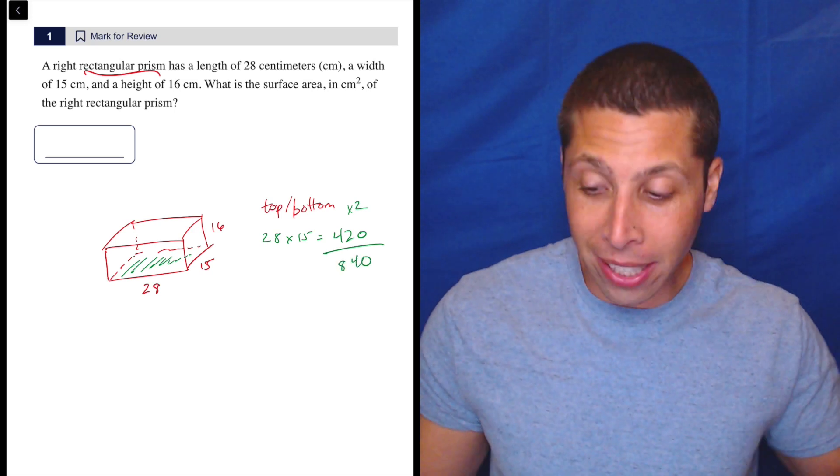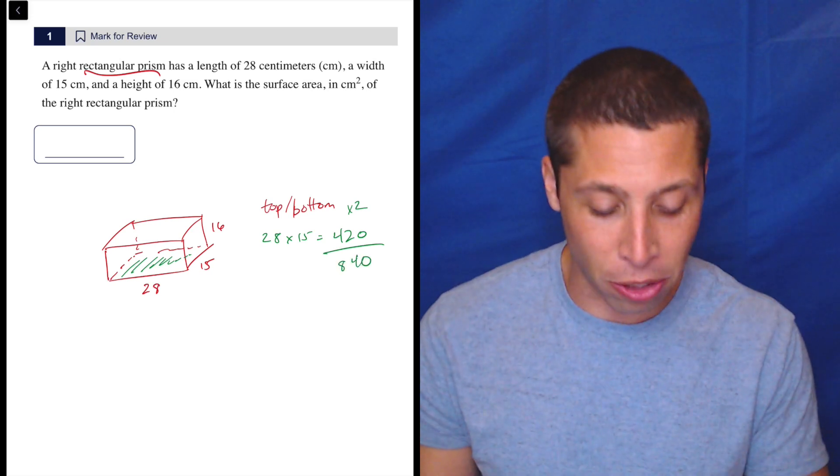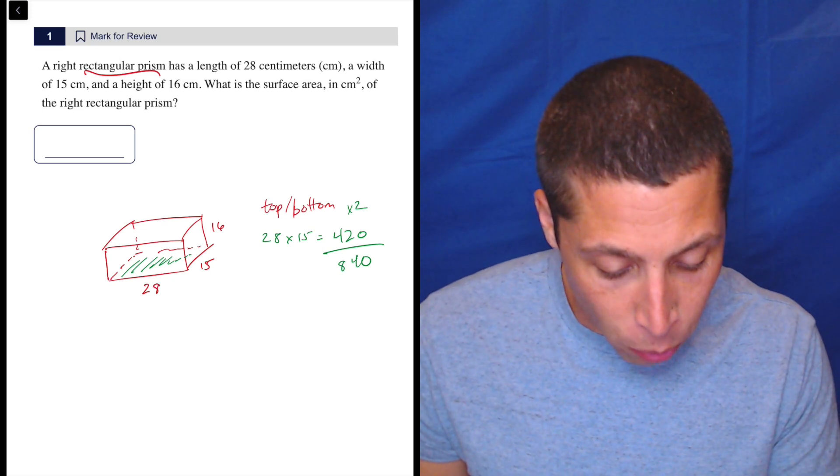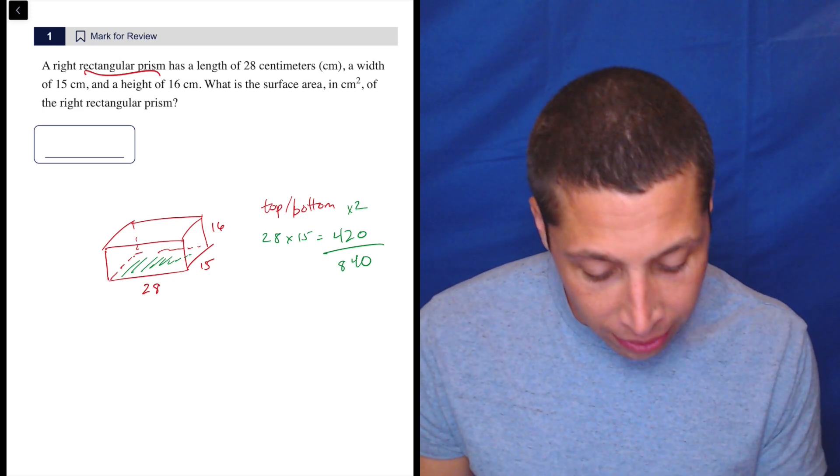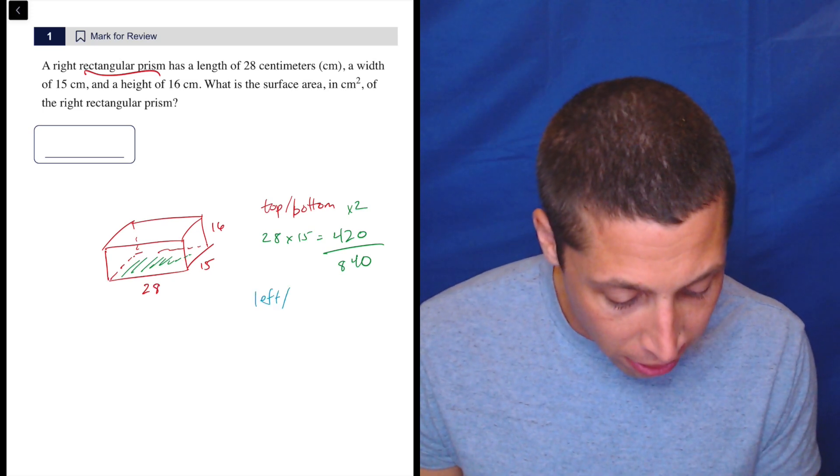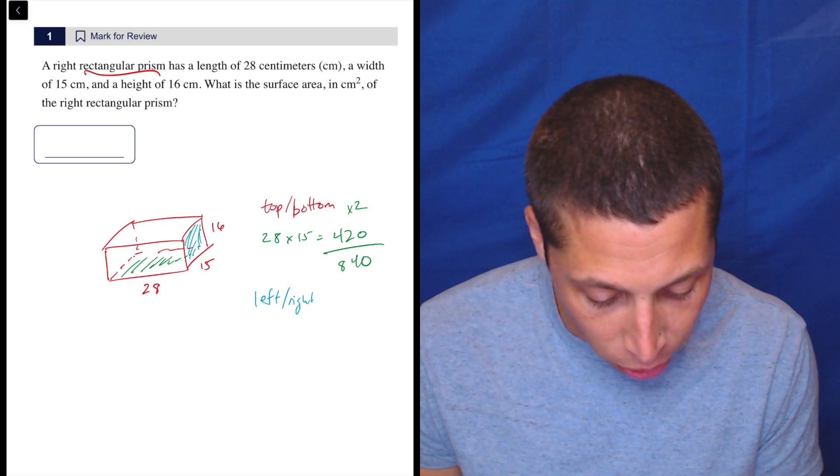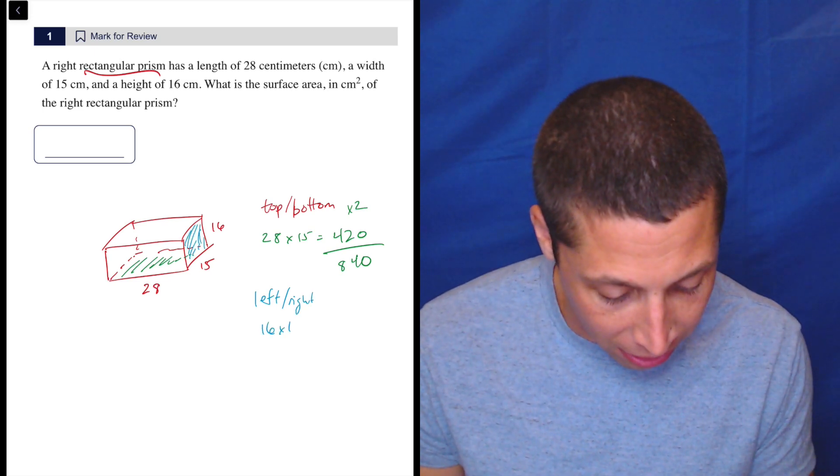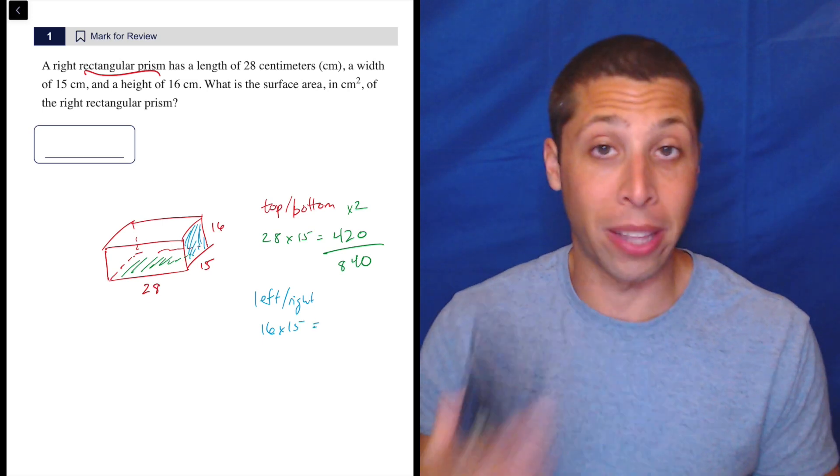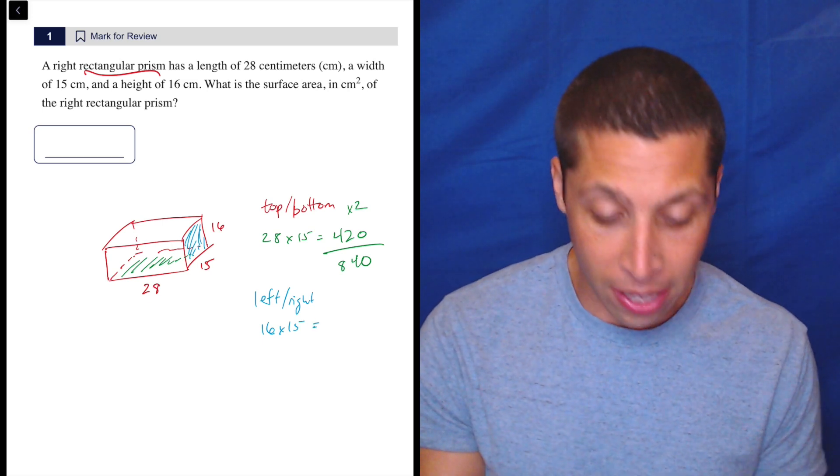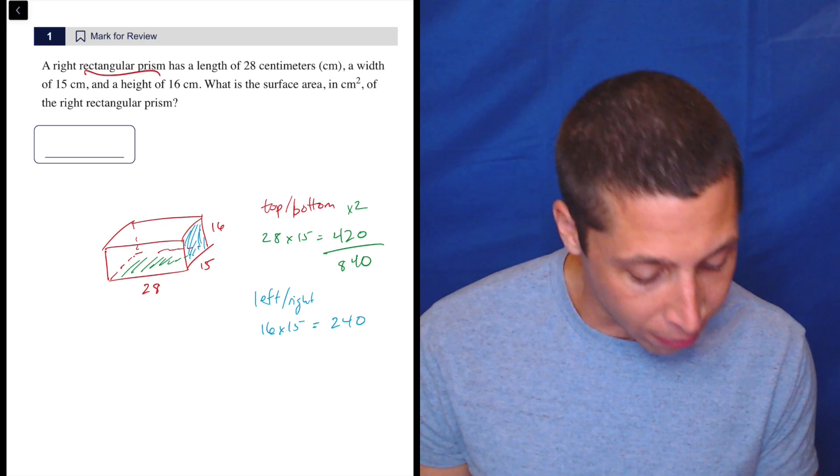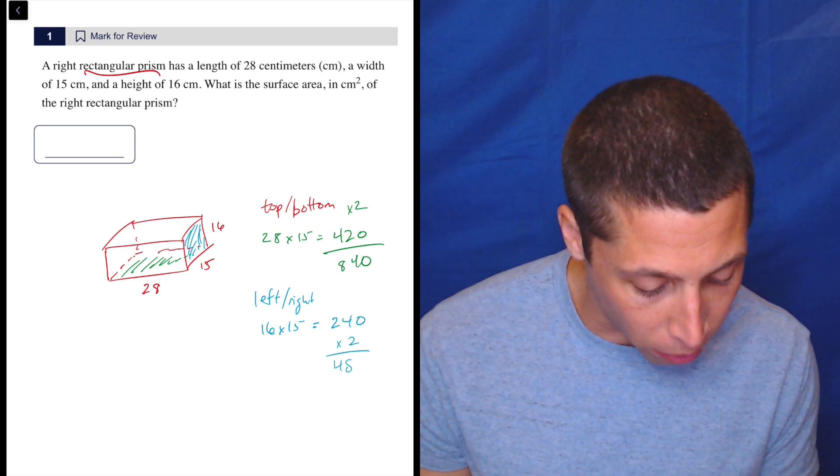However you want to do it. There's two. They're the same, and that's because it's a regular kind of shape. We also have the left and the right side. So left and right, and here we have kind of the right side is showing very nicely. So that's going to be 16 by 15. So let's figure what that is. Again, regular calculator, 16 times 15 is 240. And again, there's two of them. There's a left and a right, so that's 480.